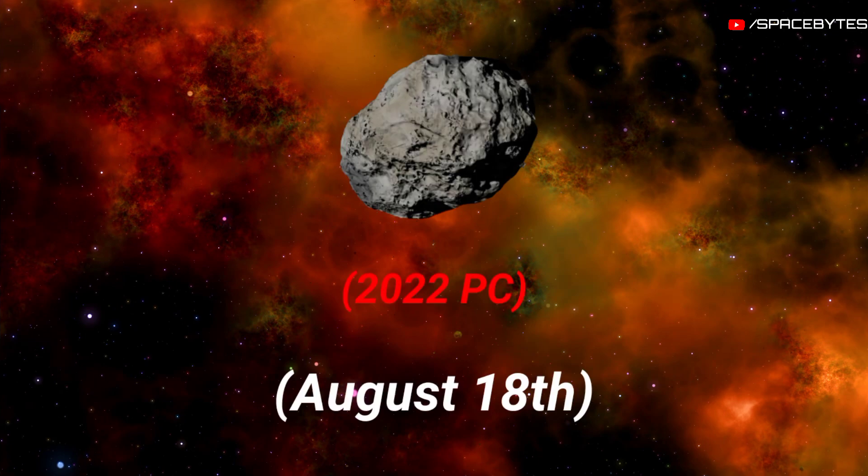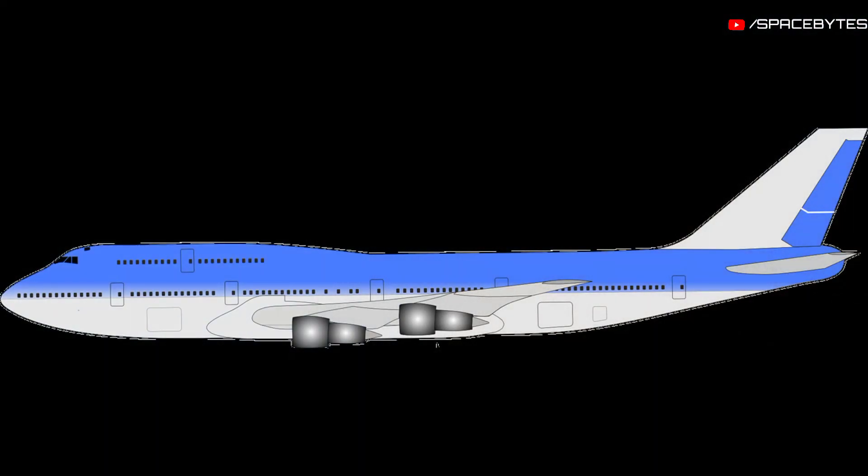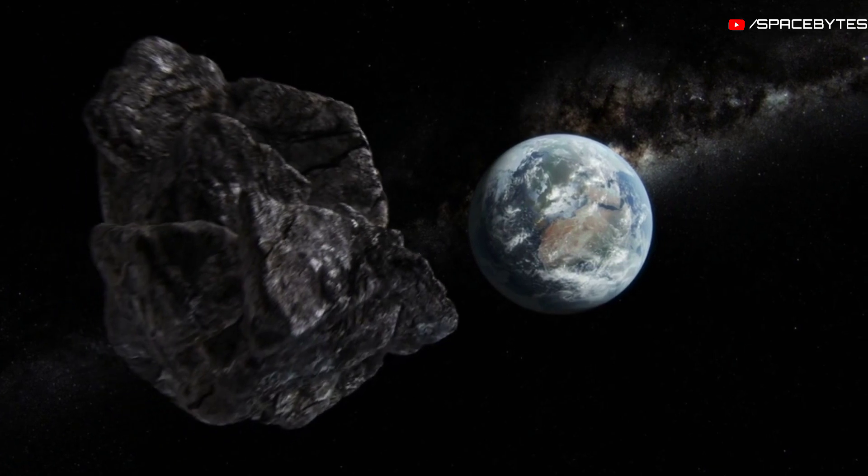First asteroid on August 18th: 2022 PC, an asteroid nearly the wingspan of a Boeing 747, is expected to whiz past Earth during the early hours of August 18th, which is the day after.